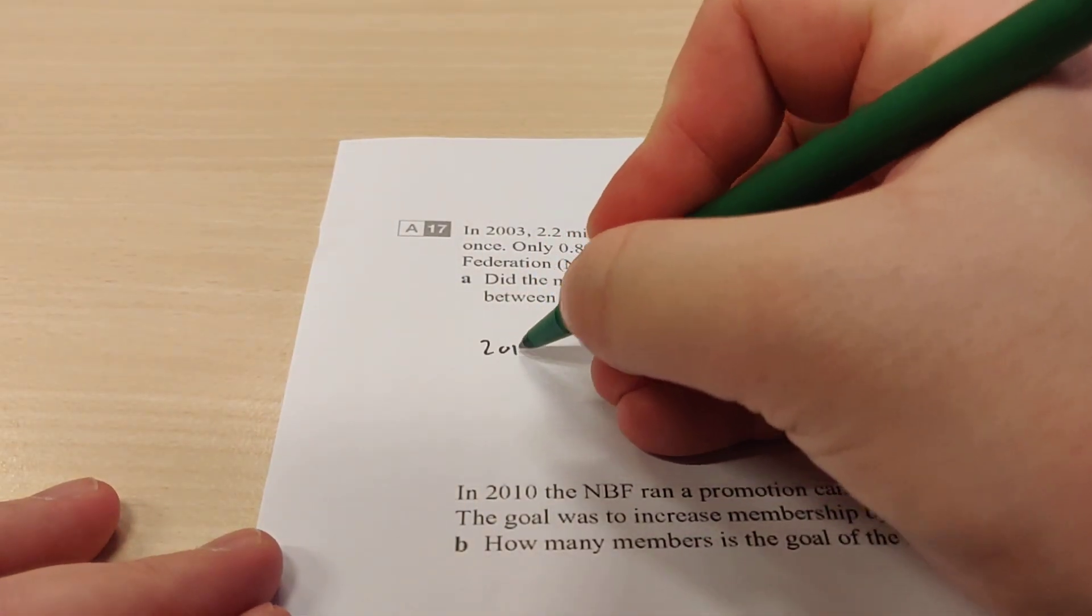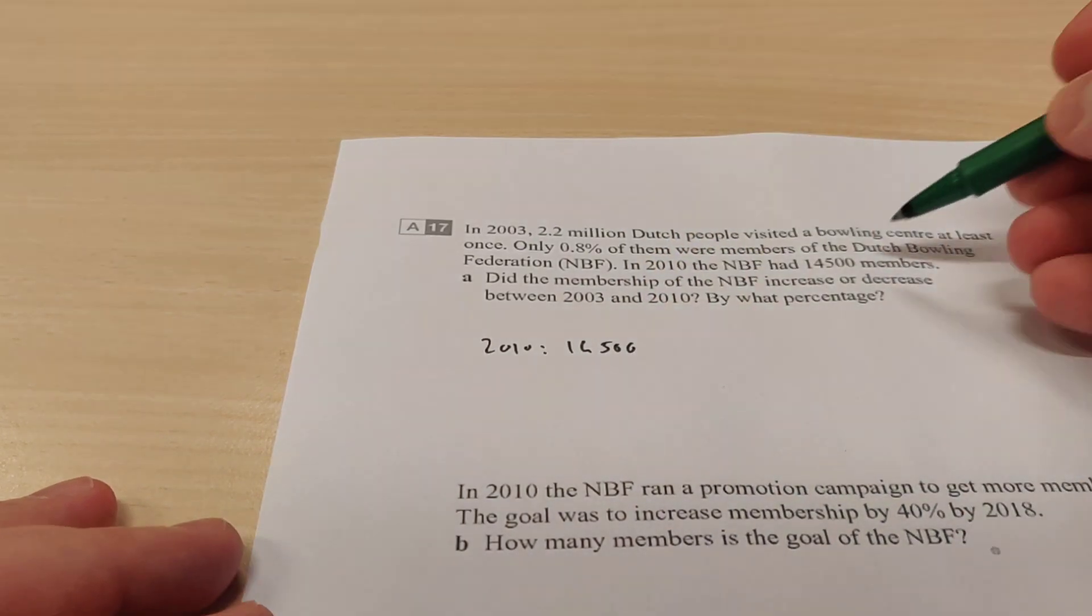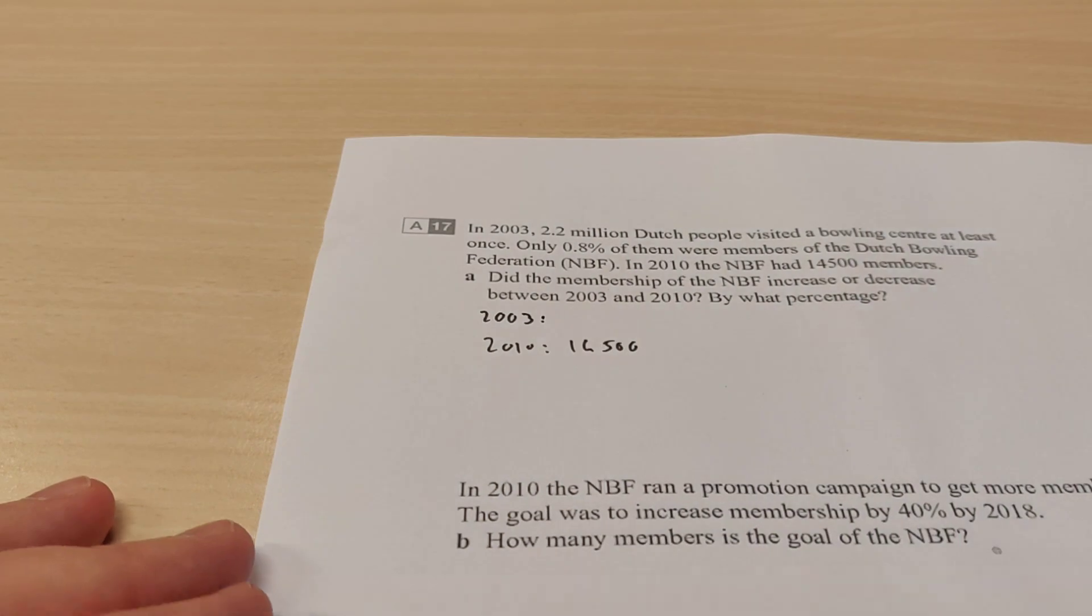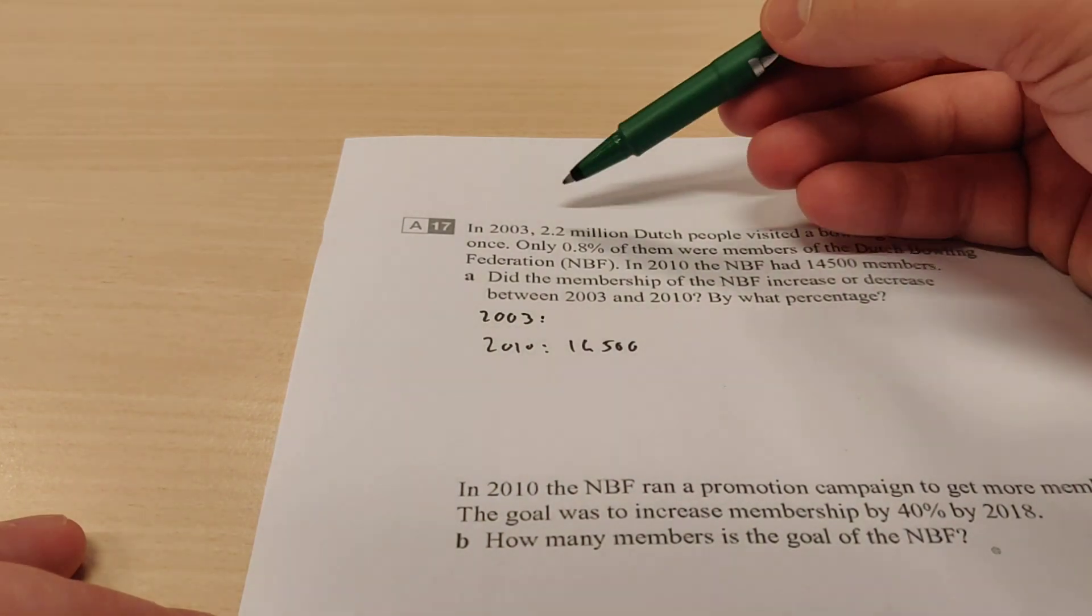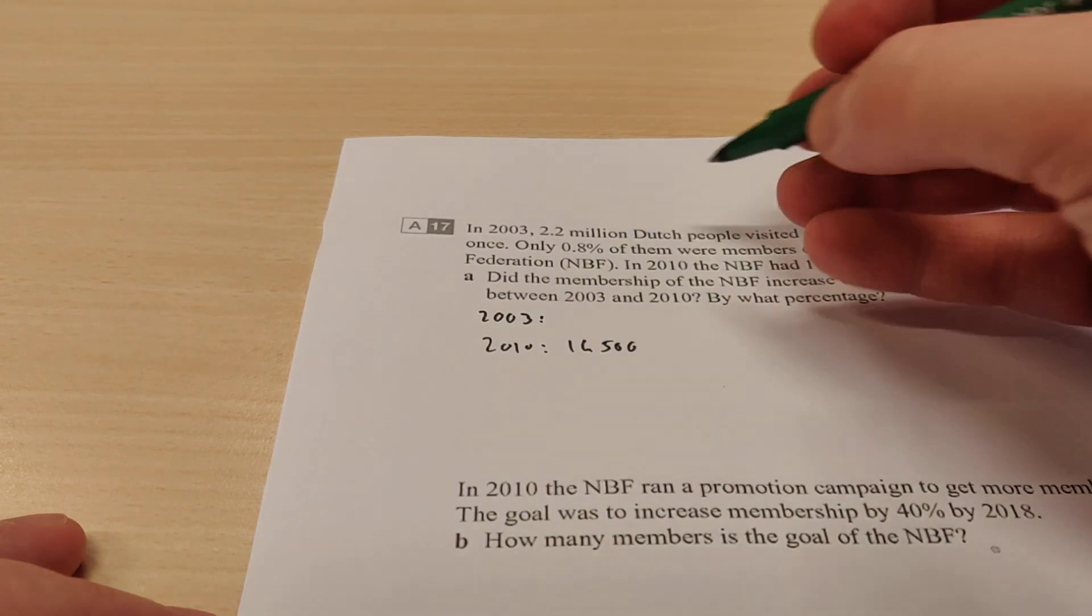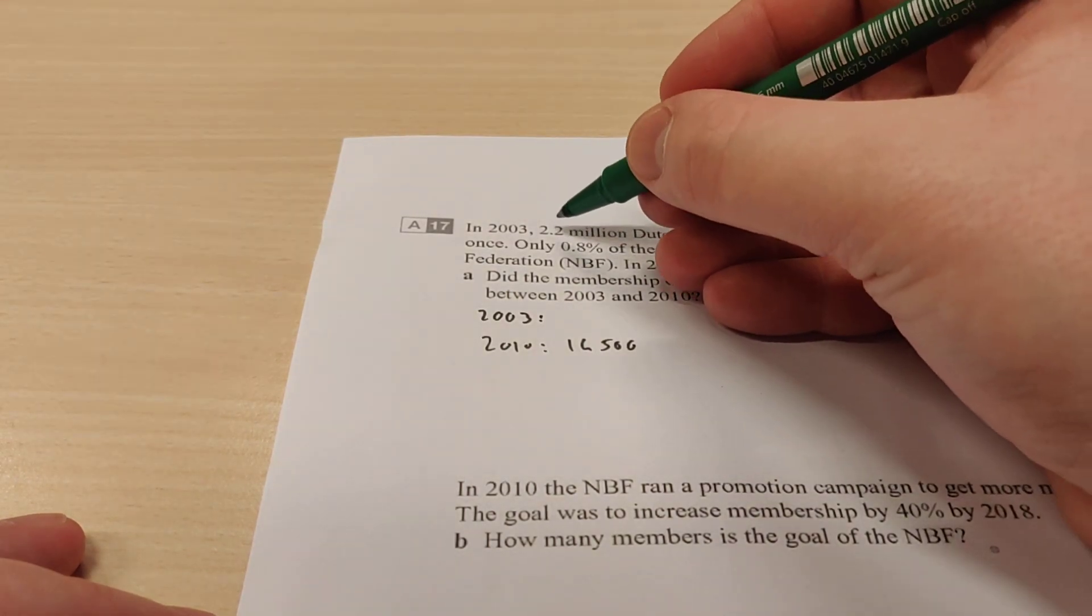Well, we know 2010 is 14,500. It says so over here. But for 2003, we don't know the number of members. We do know how many people went to a bowling center and what percentage of them were members. So we have to calculate 0.8% of that.